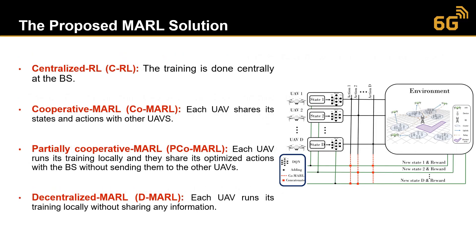We compare different multi-agent reinforcement learning techniques: first, centralized reinforcement learning where training is done centrally at the base station; then cooperative MARL where each UAV does its own training but shares information with nearby UAVs; then partially cooperative MARL where each UAV trains individually but shares only part of its information; and finally decentralized MARL where all UAVs train individually without sharing any information.